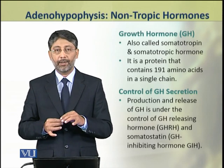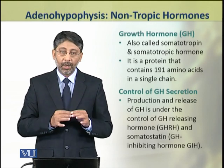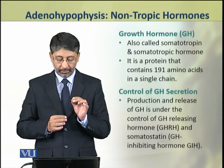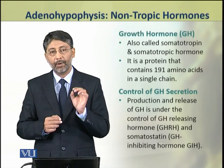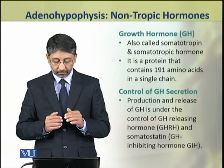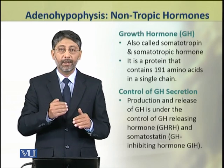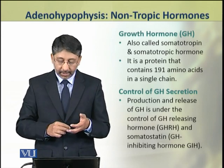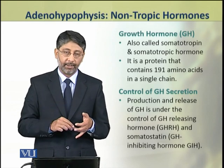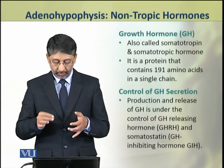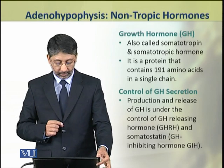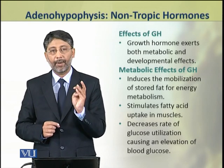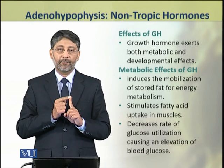Now we shall discuss growth hormone in detail. The growth hormone is also known as somatotropin and somatotropic hormone. It is a protein that contains 191 amino acids in a single chain. The production and release of growth hormone is under the control of two hypothalamic hormones: the growth hormone releasing hormone GHRH, and somatostatin, which is the growth hormone inhibiting hormone GIH. Growth hormone exerts both metabolic and developmental effects.